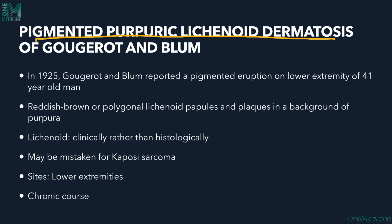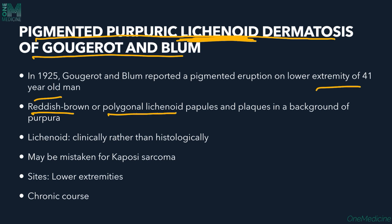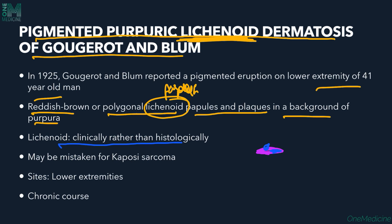Pigmented purpuric lichenoid dermatosis of Gougerot and Blum was first reported in 1925 in a 41-year-old man. It features reddish-brown or violaceous polygonal lichenoid papules and plaques in a background of purpura, resembling lichen planus. It is called 'lichenoid' because histology shows a band-like lichenoid infiltrate.